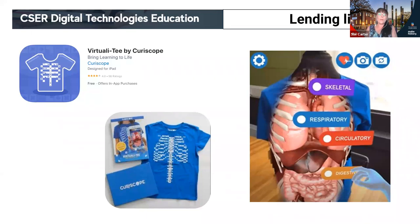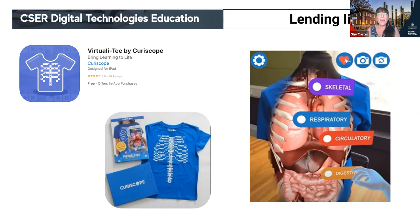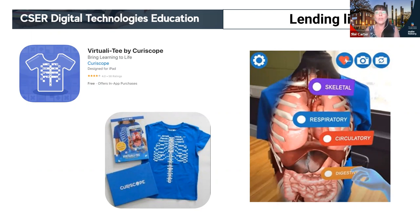The first piece of equipment we have is the Virtuality t-shirt by Curioscope, developed in the UK. These are t-shirts with an AR trigger on them — white markings that look a bit like your spine and ribs. When you use the free Virtuality app, this tool enables students to experience human body systems. You can actually see what's going on underneath your skin — students or teachers can put the t-shirt on, hold the device up, and the AR trigger peels off your skin and reveals the inside of your body.